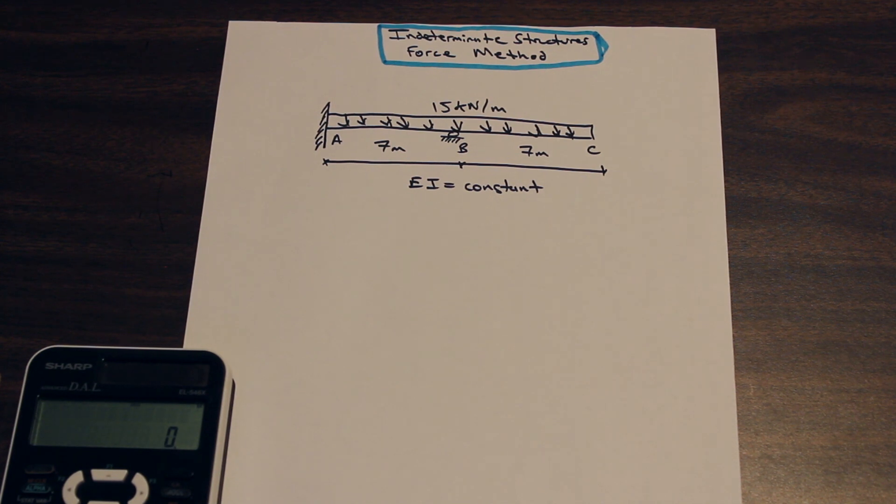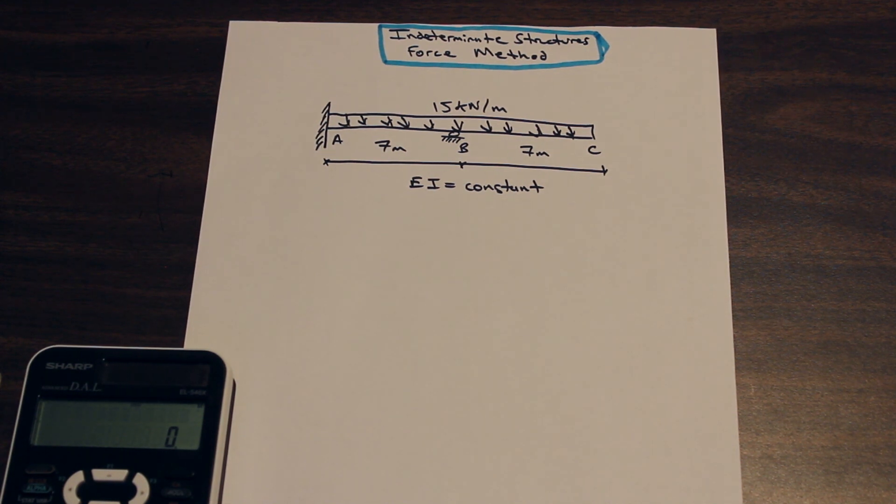This is just to get the idea of the force method. So what the force method involves is first taking a look at the structure that you're given. In this case, we have a beam, and first of all, the first thing we always want to do is count the number of reactions on the beam.